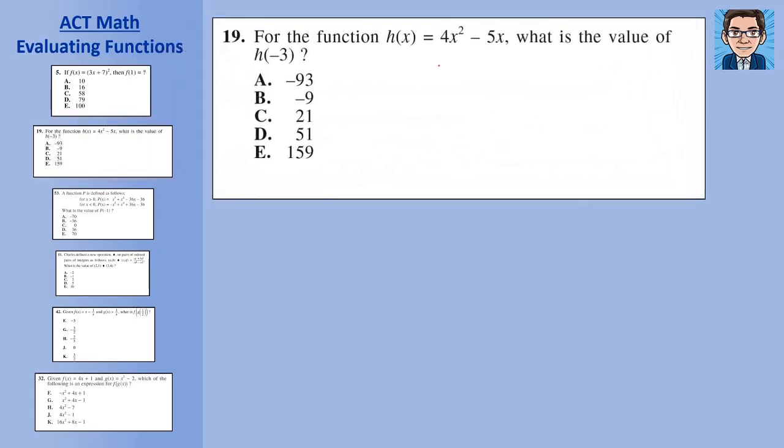Sometimes with functions, the variable shows up twice. We just put that variable into both places where x shows up. So h of negative 3 is 4 times negative 3 squared minus 5 times negative 3. I always put what I'm putting in inside parentheses to make sure that negative is included. Negative 3 squared is 9, so that's 4 times 9. Negative 5 times negative 3 is positive 15. Do multiplication first: 36 plus 15. Add these together and we get 51.